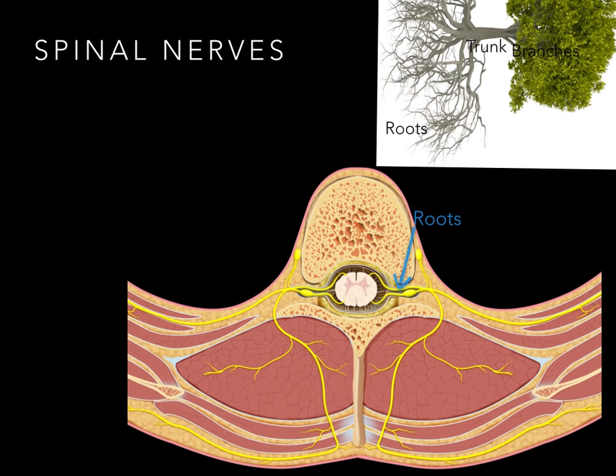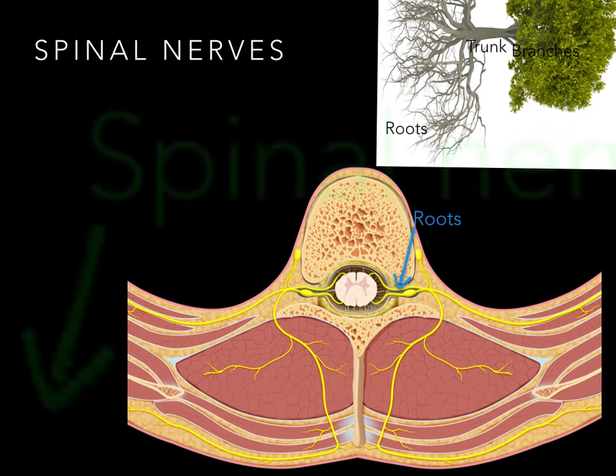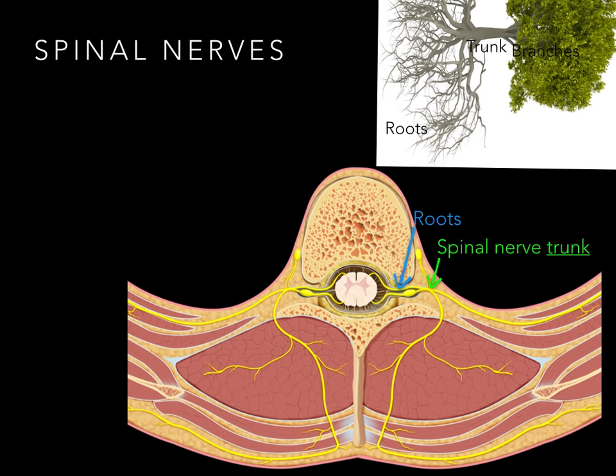So when we look at the spinal nerve, we see roots, spinal nerve trunk, and rami. The term ramus, or rami for plural, means branches. Roots lead into a trunk, lead into branches, just like a tree.